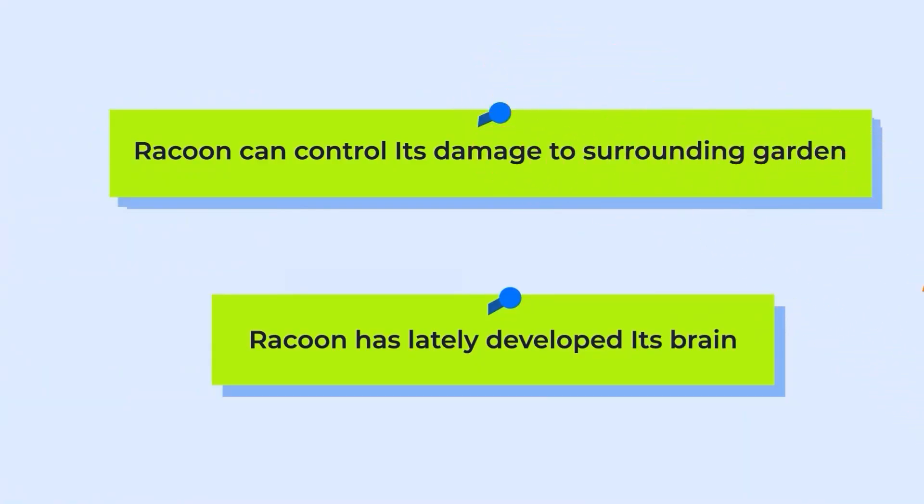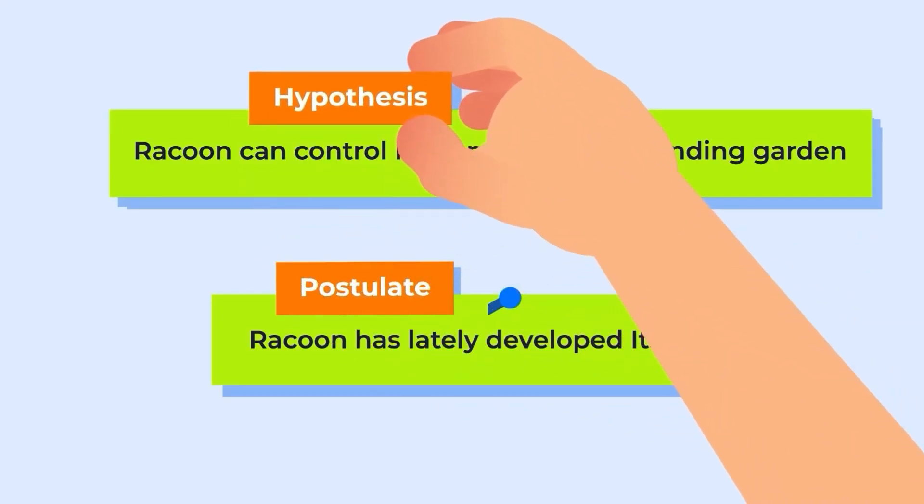In other words, an assumption that a condition is true is a postulate, and a plausible explanation of the phenomenon, which may contain a postulate, is a hypothesis.